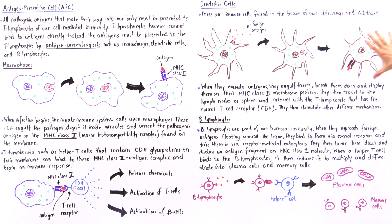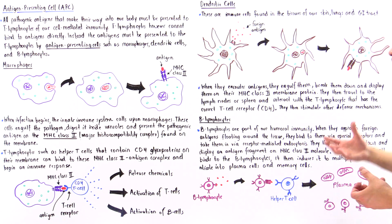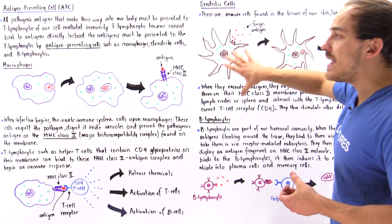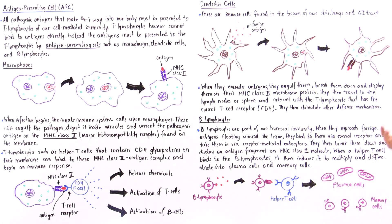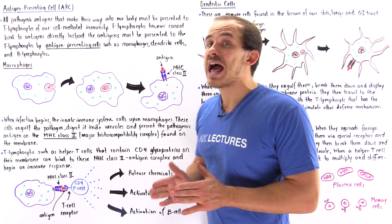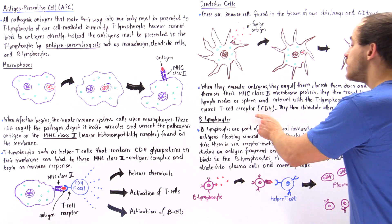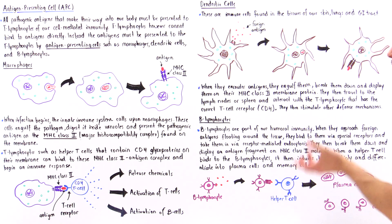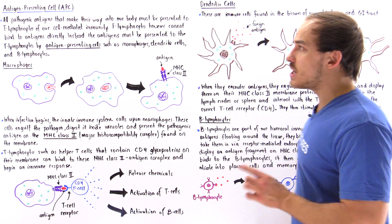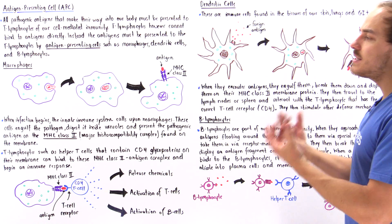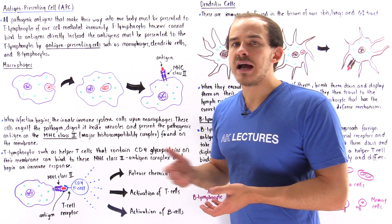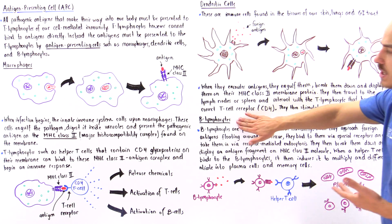The dendritic cell is motile, which means it can then move into the spleen or the lymph nodes of our immune system. There it begins to interact with a T lymphocyte that, once again, has the CD4 glycoprotein — the proper T cell receptor found on the membrane of that T lymphocyte. When these two cells interact, it elicits some type of defensive immune response.